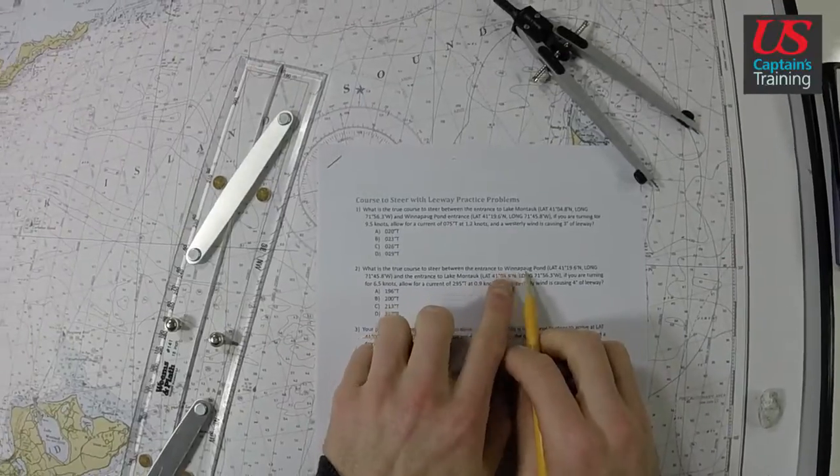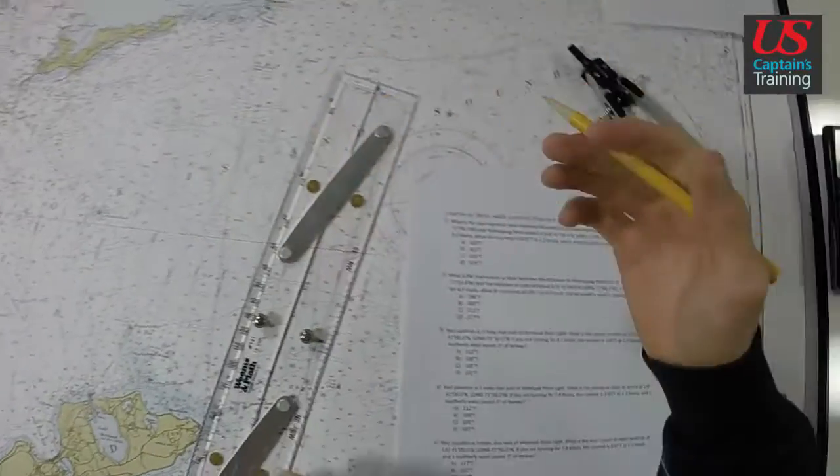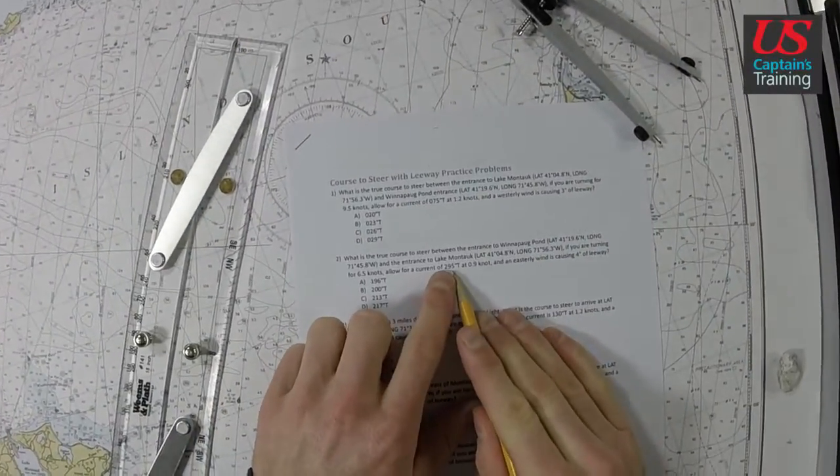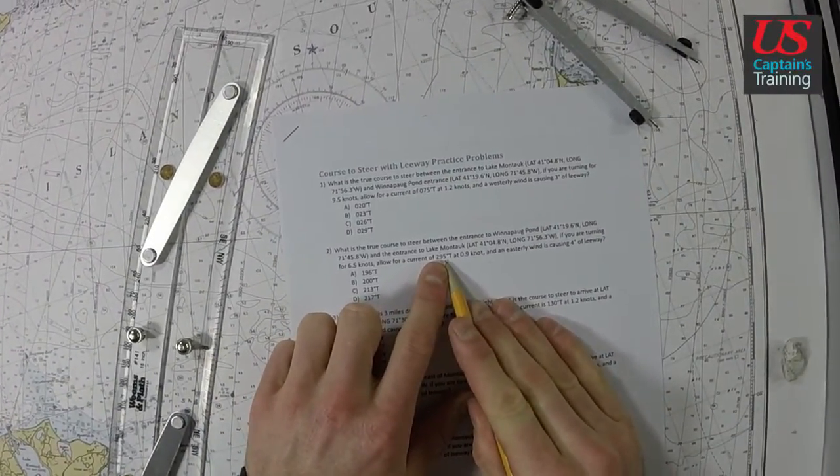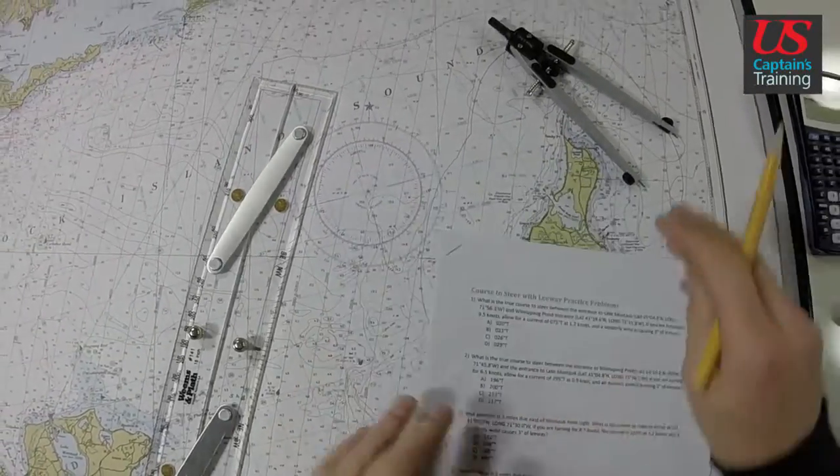Again, Winnipeg entrance to Lake Montauk, we're going this way. The set of our current is 295 true, and the drift is 0.9 knots. So, 295 true.